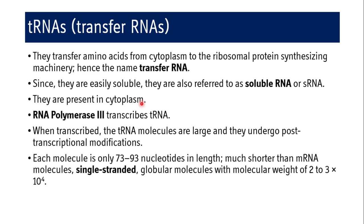tRNAs are present in the cytoplasm because protein synthesis occurs there. After being synthesized outside the nucleolus, they are found in the cytoplasm. The enzyme synthesizing tRNA is RNA polymerase III. If you remember from the previous section, RNA polymerase I and RNA polymerase III are the two RNA polymerases which synthesize ribosomal RNAs. The 5S ribosomal RNA is synthesized by RNA polymerase III outside the nucleolus, and the same enzyme also transcribes tRNA — this is a very important fact on which you can get an MCQ.